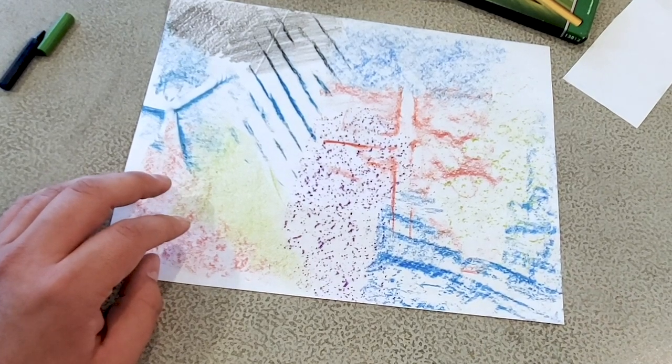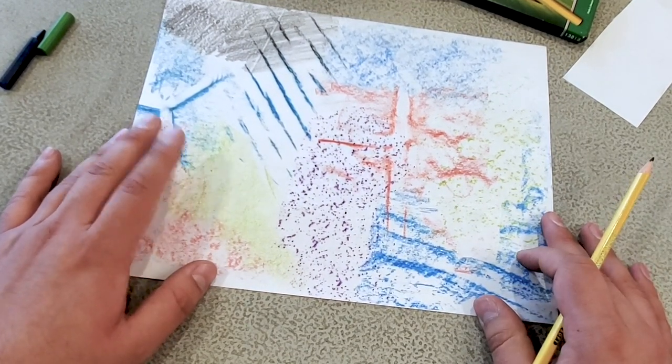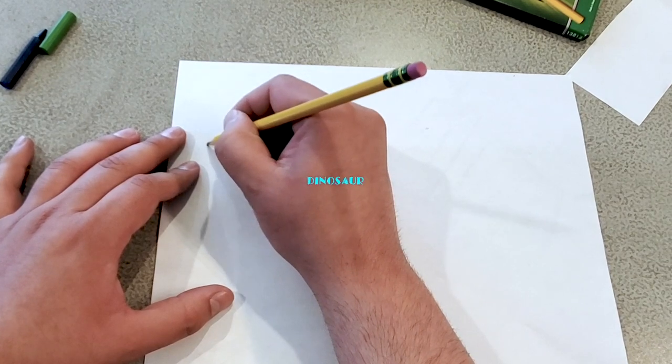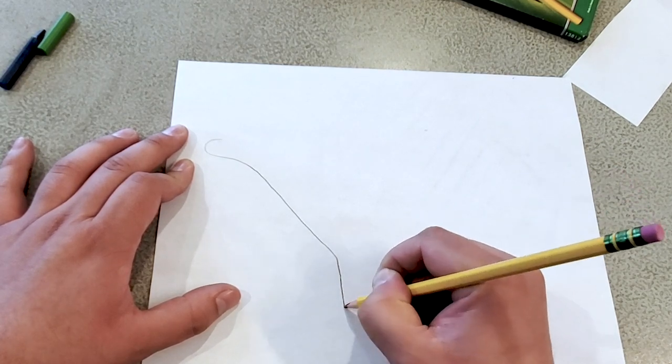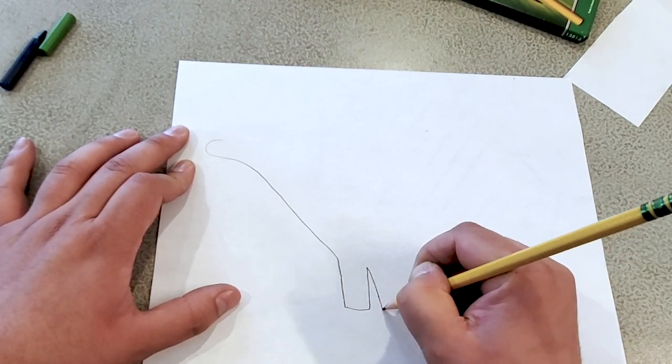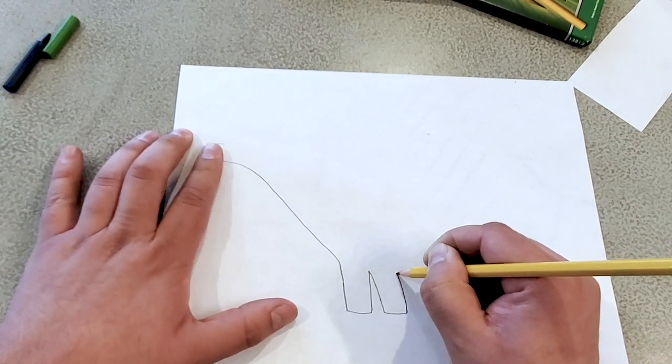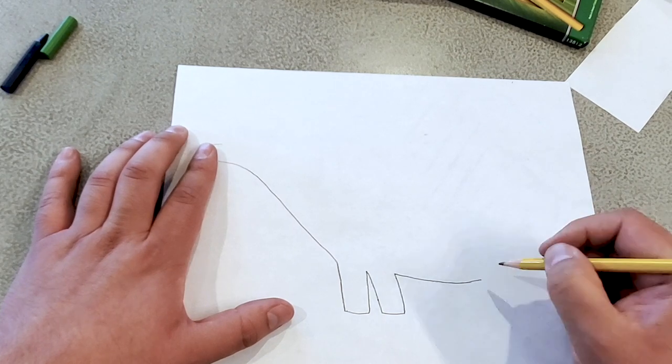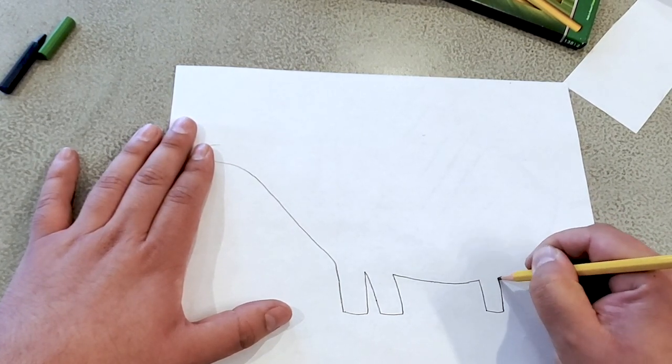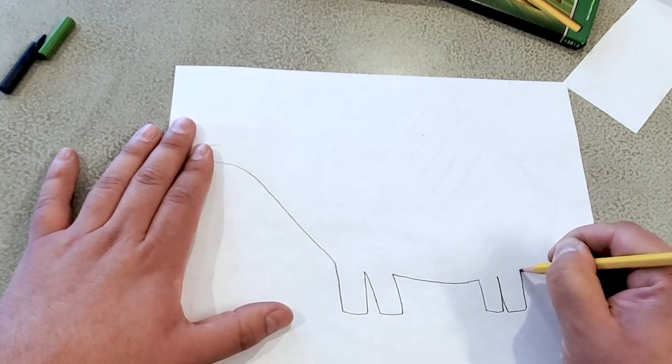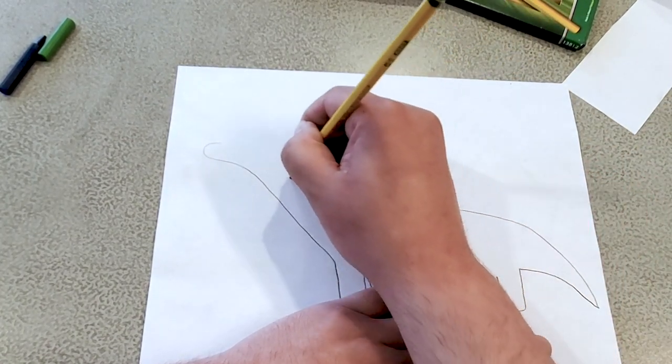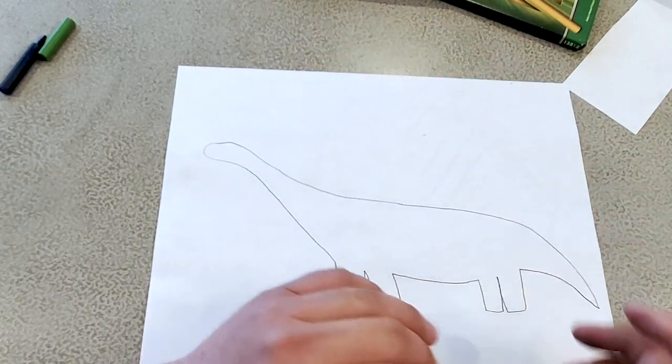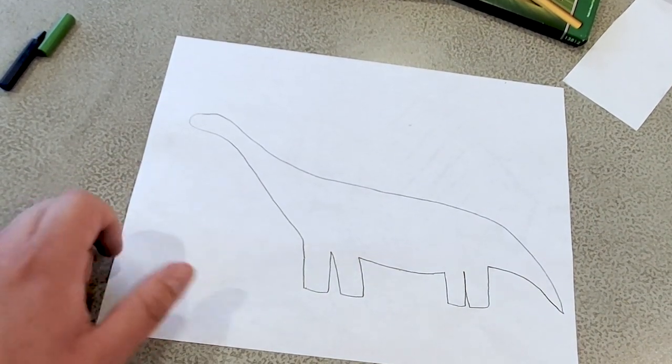Another thing that you can do with the texture rubbings is you can take the rubbings and then flip them over on the back and then draw your favorite dinosaur. I like the long neck dinosaurs. I think that it would be so cool to have such a long neck. You can climb all the way up to the trees, reach all the way up there and get all of the leaves that you wanted.